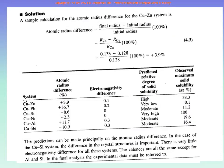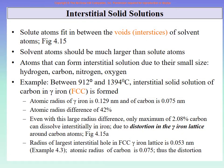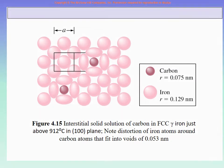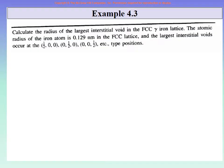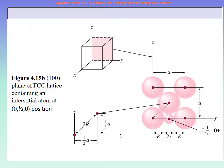Continuing with the example, we then covered interstitial solid solution, talking about voids or interstices and distortion in the lattice. We showed a schematic diagram to explain interstitial solid solution, followed by an example calculating the radius in an interstitial solid solution, with further geometric details of the example.